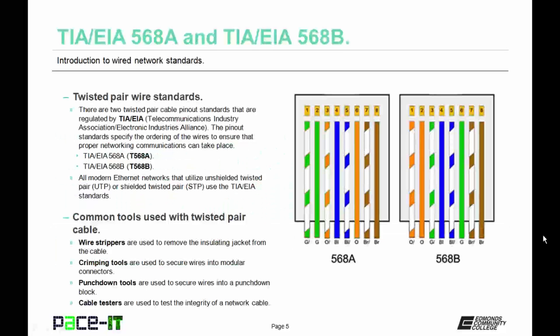The TIA-EIA-568A and 568B standards deal with twisted pair wires. These are the two cable pinout standards regulated by the TIA-EIA — that's the Telecommunications Industry Association Electronic Industries Alliance. The pinout standards specify the ordering of the wires to ensure that proper networking communication can take place.